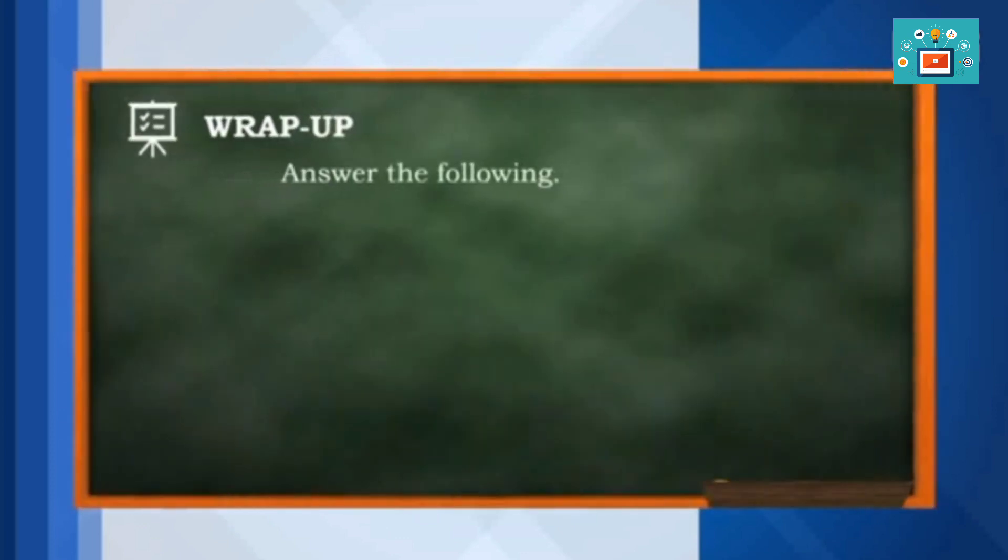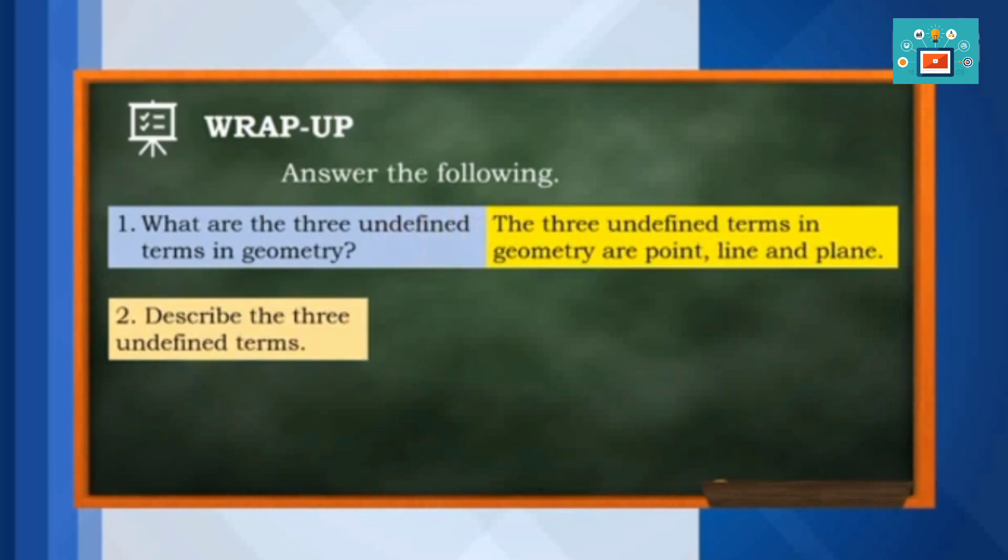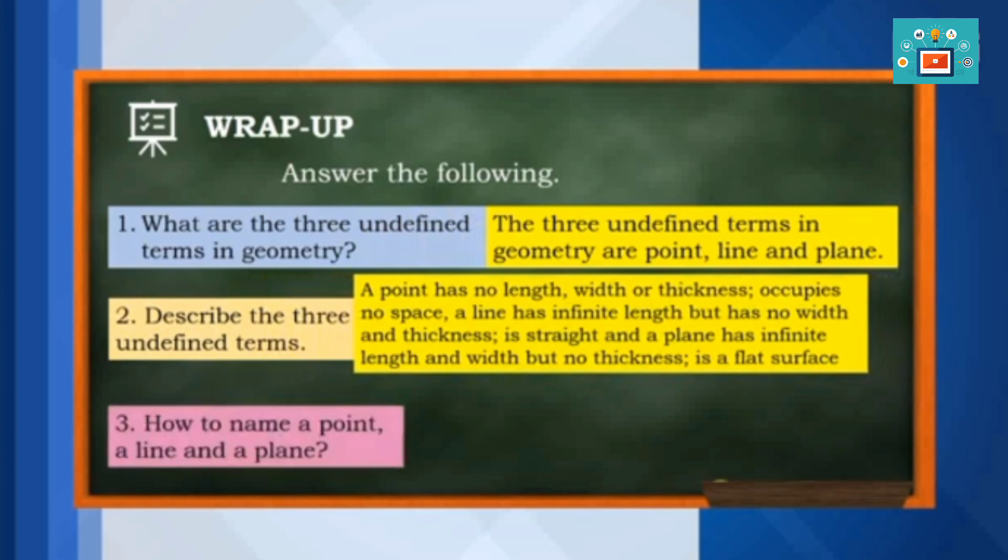To sum it up, answer the following. What are the 3 undefined terms in geometry? Describe the 3 undefined terms. And third, how to name a point, a line, and a plane.